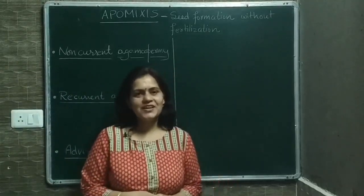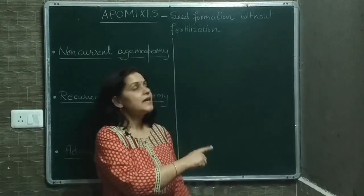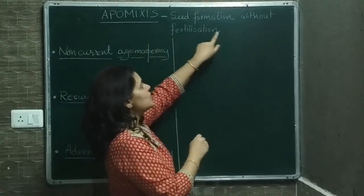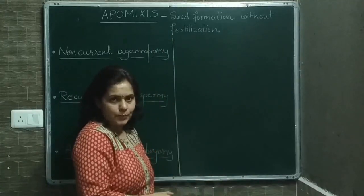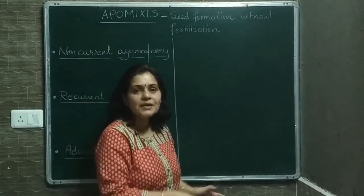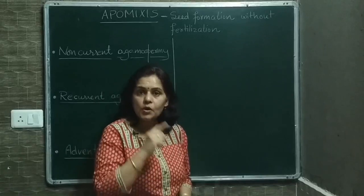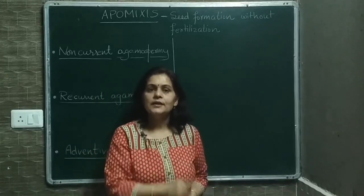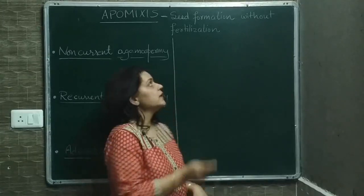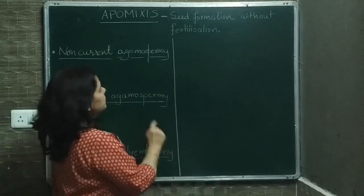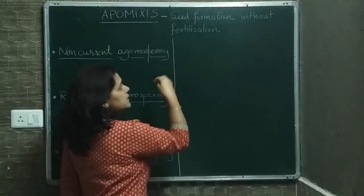Hello students, welcome to my channel Study Well E-Learning. Today we are going to discuss about apomixis. Apomixis is seed formation without fertilization, so it is a type of asexual reproduction that mimics sexual reproduction. Seeds are being formed, but because it does not involve fertilization, we cannot consider it as sexual reproduction — that's why it is asexual reproduction.